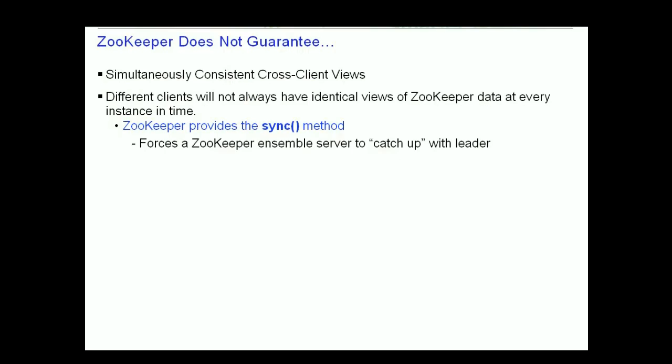It is important to understand that ZooKeeper does not make a simultaneously consistent cross-client view guarantee. This means that ZooKeeper does not guarantee that different clients will have identical views of ZooKeeper data at every instance in time. Network delays and other factors may make it possible for one client to perform an update before another client is notified of the change. The way we can handle this is using the sync method that ZooKeeper provides, which forces a ZooKeeper ensemble server to catch up with the leader.